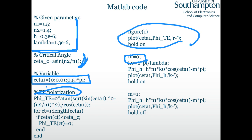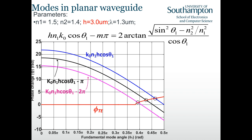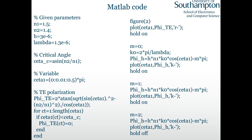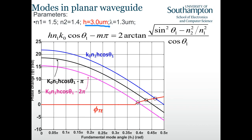In a second example, we increase the thickness to 10 times thicker. We again compute the critical angle, the TE polarization phase rotation, and the standing wave phase rotations for m = 1, 2, and 3. We get three intersections, meaning there are three modes supported by this fiber.